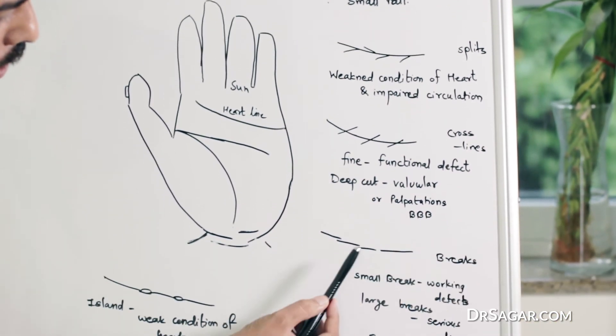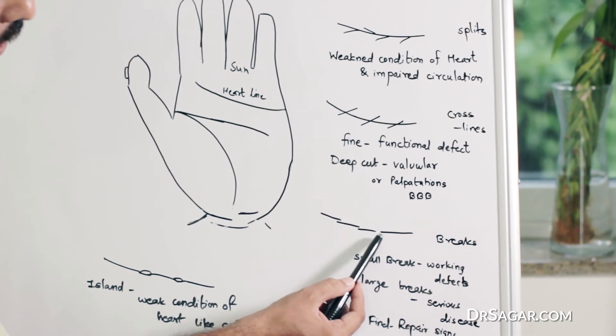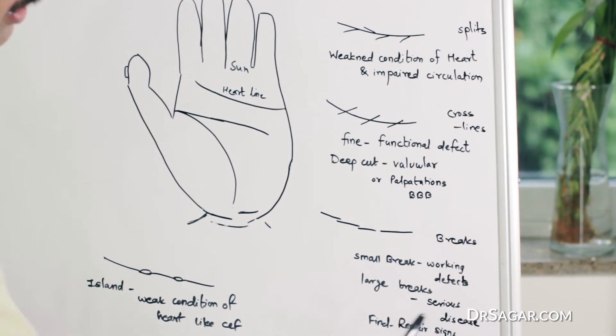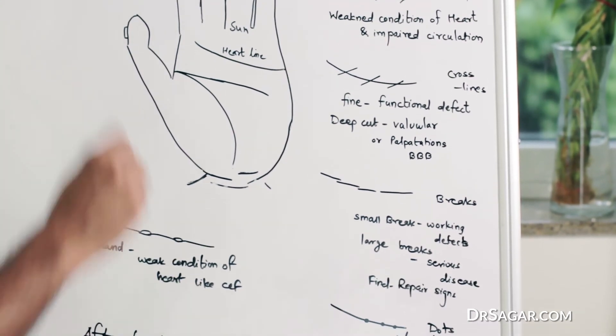Then, breaks. Here, breaks indicate that if it is a small break, the working defect is present. In the large breaks, serious condition of the heart is seen. In this condition, please find the repair signs.